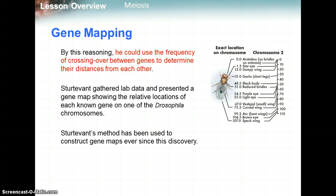Sturtevant gathered lab data and presented a gene map showing the relative locations of each known gene on the Drosophila chromosomes of the fruit fly. Here's the gene map — we can see all the different types of genes the fruit fly has on chromosome 2. His method has been used to construct gene maps ever since this discovery.